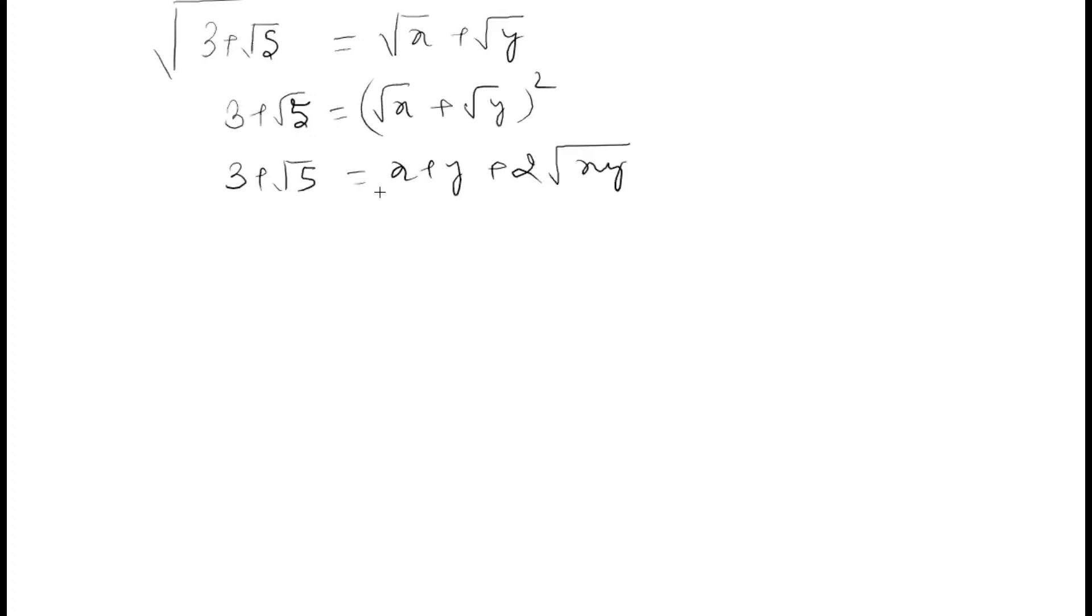Now here what we do is that we compare both sides and say that the rational part is equal to rational. And that's why we say that x plus y equals 3. And then 2 root xy equals square root of 5. So when you square this, what you get is 4xy equals 5.